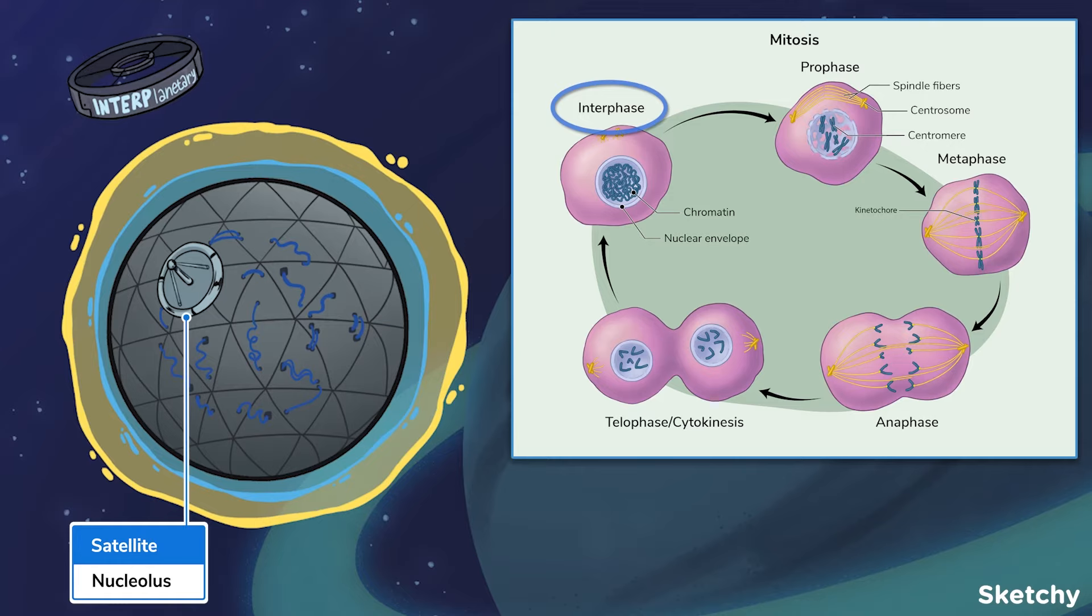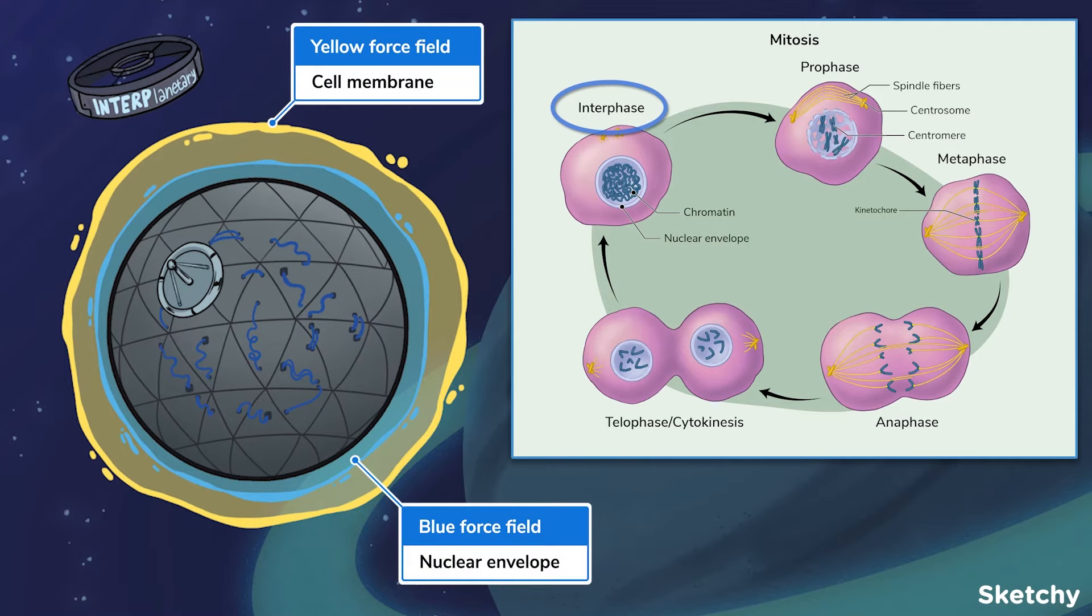The nucleolus is a spherical body located inside the nucleus that's always present during interphase. The nucleolus is responsible for producing and assembling ribosomes. Finally, these force fields will symbolize the nuclear envelope and cell membrane, respectively. We'll continue to monitor them along the way.